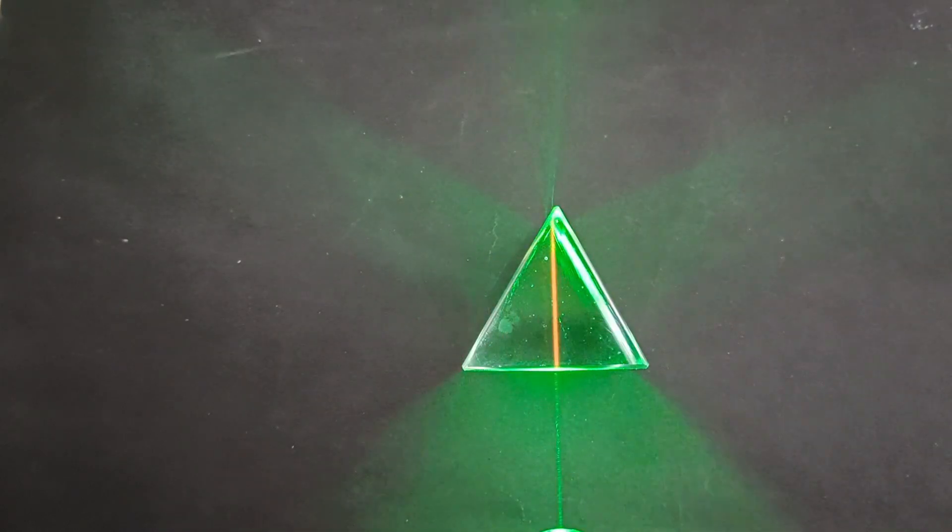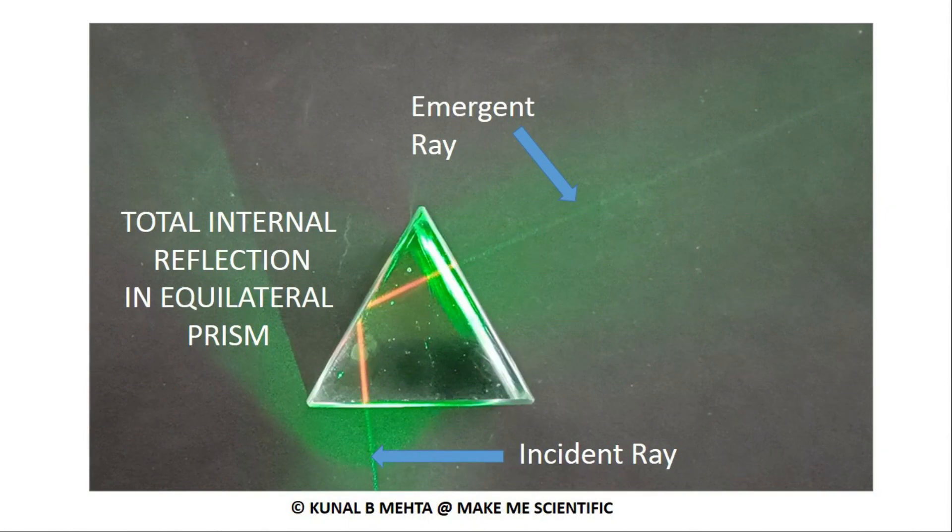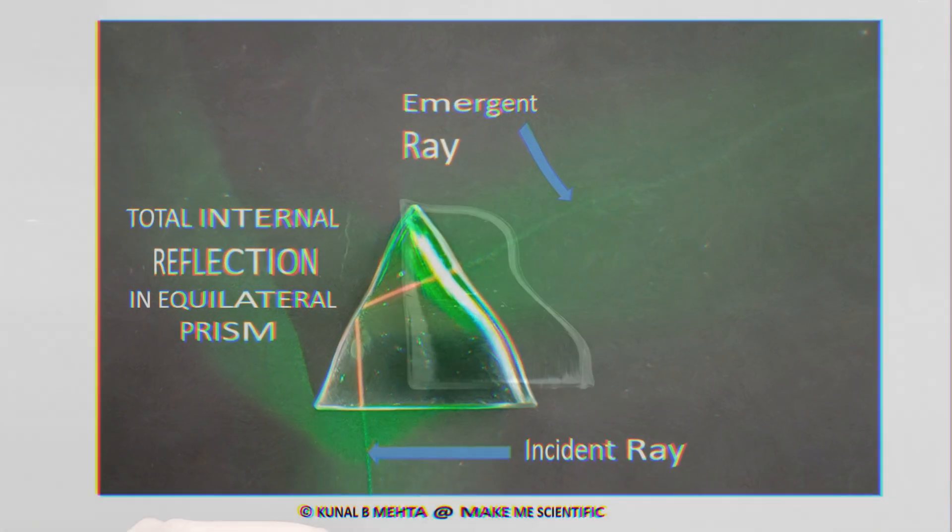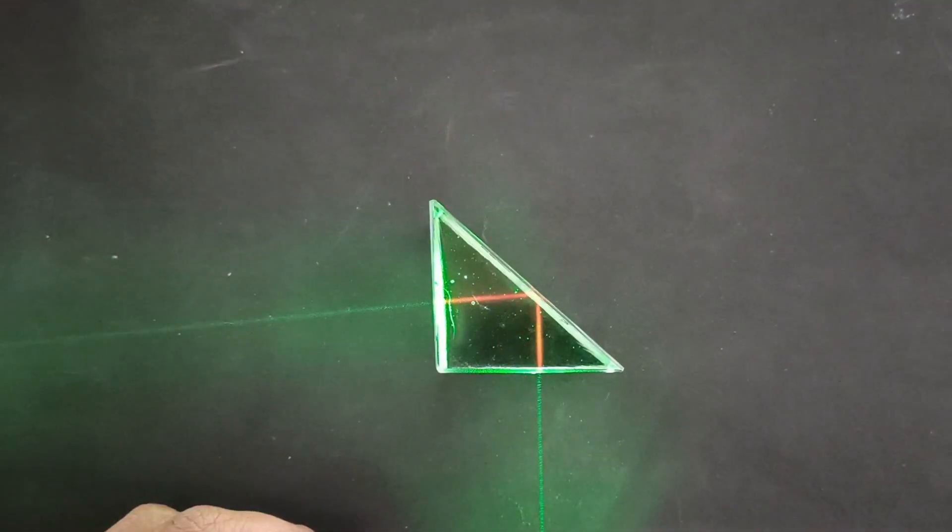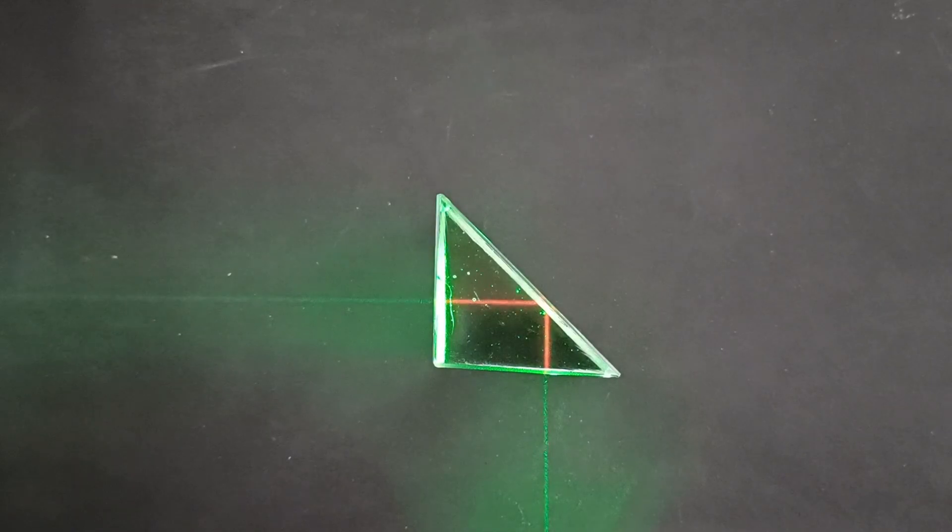Here also we see the total internal reflection and the ray deviates by 90 degrees.